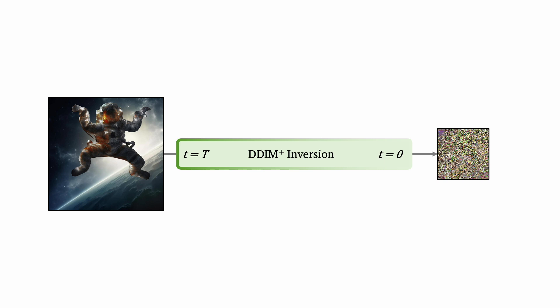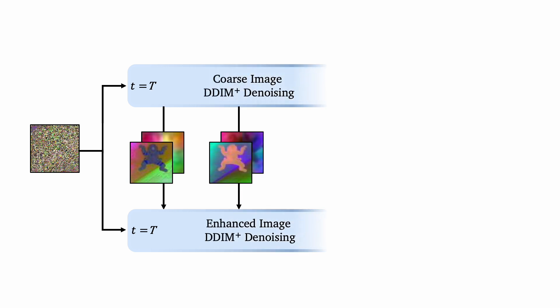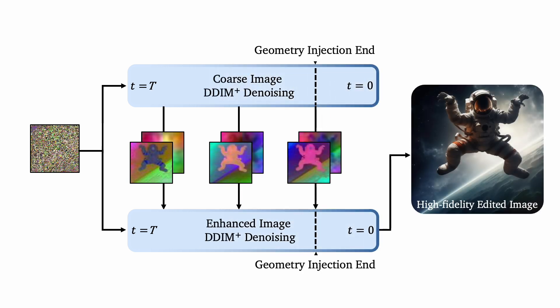To refine this image, we begin with DDIM inversion of the coarse rendering image to obtain the inverted latents. Note that DDIM plus represents DDIM with the DreamBooth fine-tuned and depth-controlled model. We then inject self-attention maps and feature maps from the initial image's denoising process into the enhanced image denoising steps. This technique helps in preserving the geometry of the modified object while restoring the visual quality of the edited image.